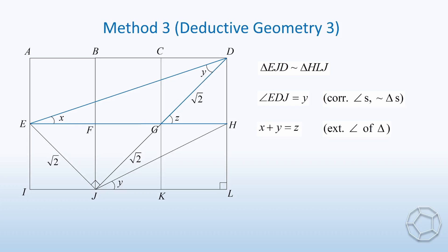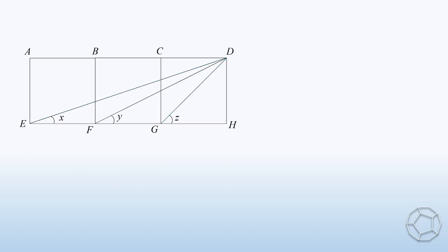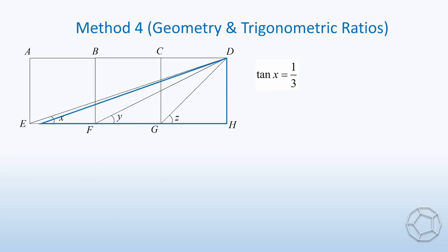Then, what about using a little bit trigonometric ratio? Here comes the fourth method. Note that tangent x is equal to 1 over 3, tangent y is equal to 1 over 2, and tangent z is equal to 1. Our goal is to prove that x plus y is equal to z. In other words, arctangent 1 over 3 plus arctangent 1 over 2 is equal to arctangent 1. Now, we drop a perpendicular line from point G to the side DF. Let this point be P. We are going to figure out the lengths of the sides GP, FP, and DP.